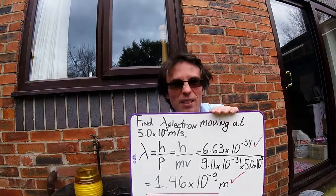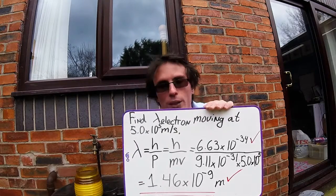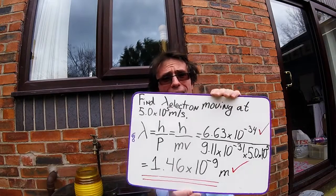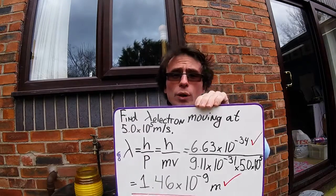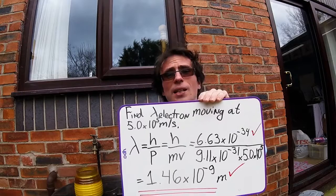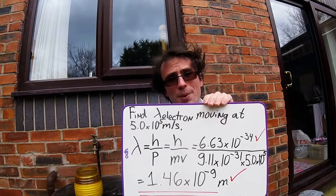This together gives us the momentum. And if we plug those numbers into a scientific calculator, we're going to get an answer of 1.46 times 10 to the power of minus 9 meters.